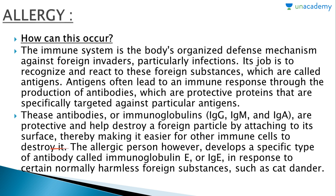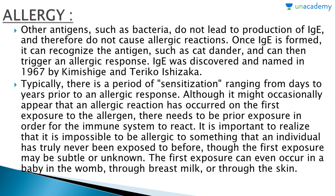These immunoglobulins help destroy a foreign particle by attaching to its surface, thereby making it easier for other immune cells to destroy it. The allergic person, however, develops a specific type of antibody called immunoglobulin E, or IgE, in response to certain normally harmless foreign substances such as cat dander, which is a kind of protein.